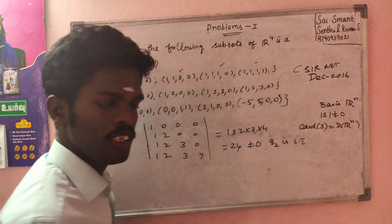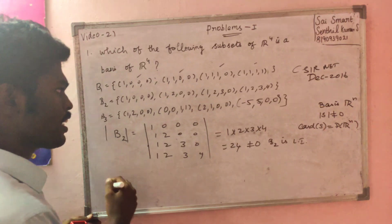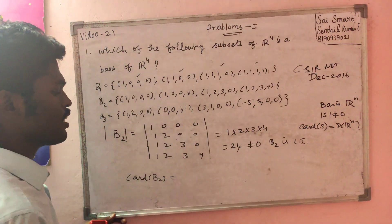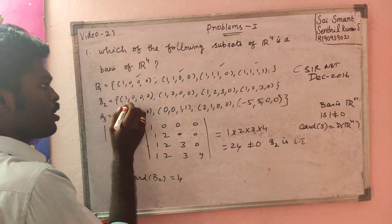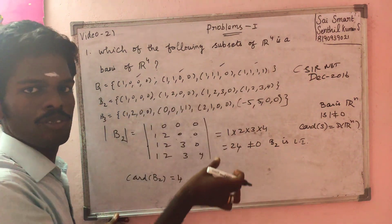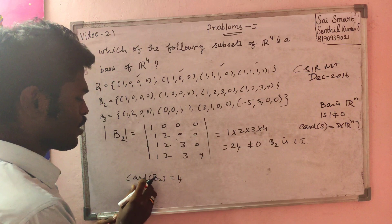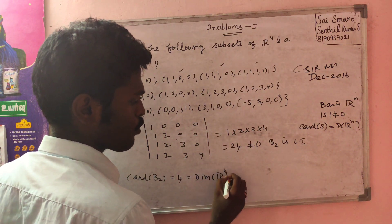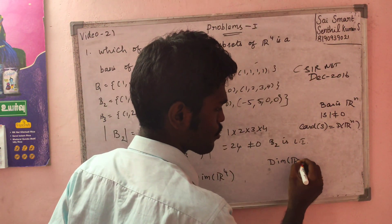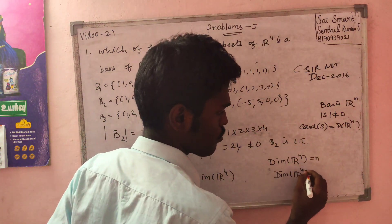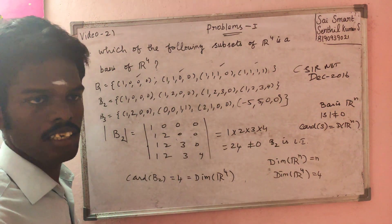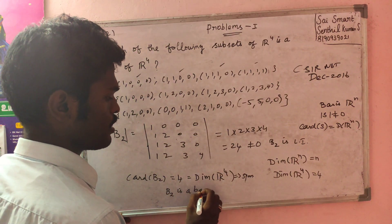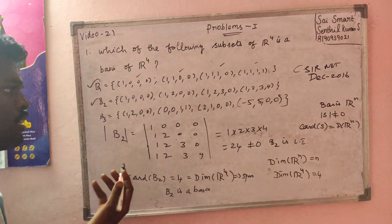So B2 is linearly independent — you can get confirmed. Because the cardinality of B2, the cardinality of S is the same as the dimension of R. Cardinality of B2 is 1,2,3,4 — 4 elements — equal to the dimension of R^4. So spanning is satisfied. B2 is also a basis.